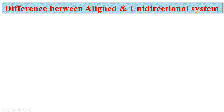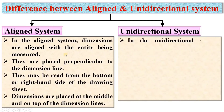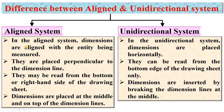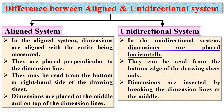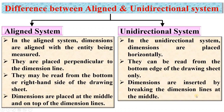The difference between the aligned and unidirectional system is very important for exams. In the aligned system, dimensions are aligned with the entity being measured and placed perpendicular to the dimension line; they may be read from the bottom or right side of the drawing sheet, and placed on top of the dimension line. In the unidirectional system, dimensions are placed horizontally, read from the bottom edge only, and inserted by breaking the dimension line at the middle. You can follow either method in a drawing, but you cannot mix both systems in a single drawing.